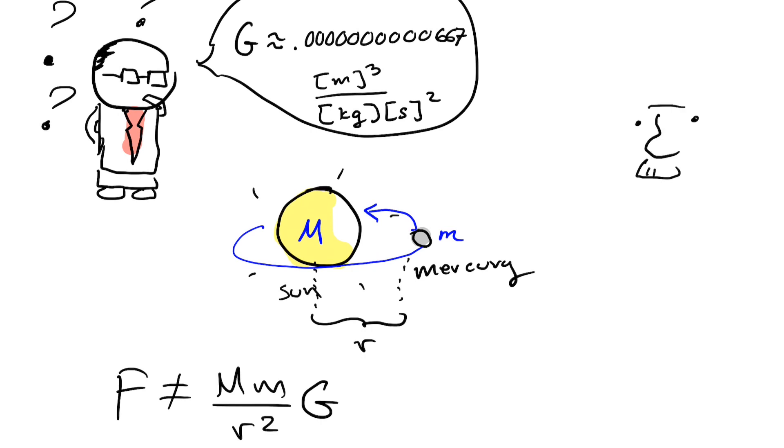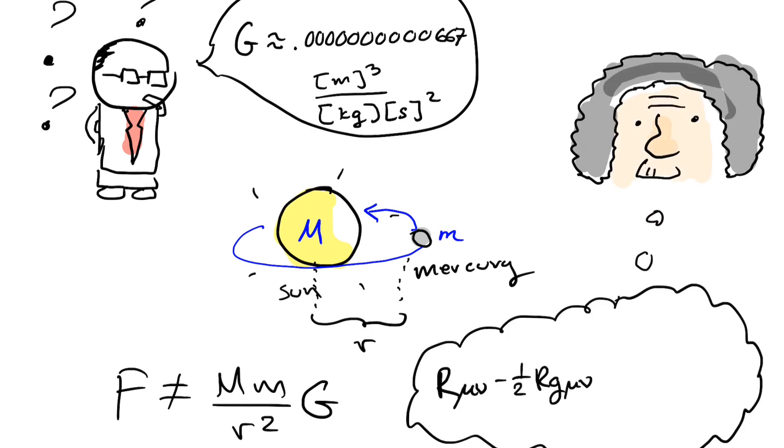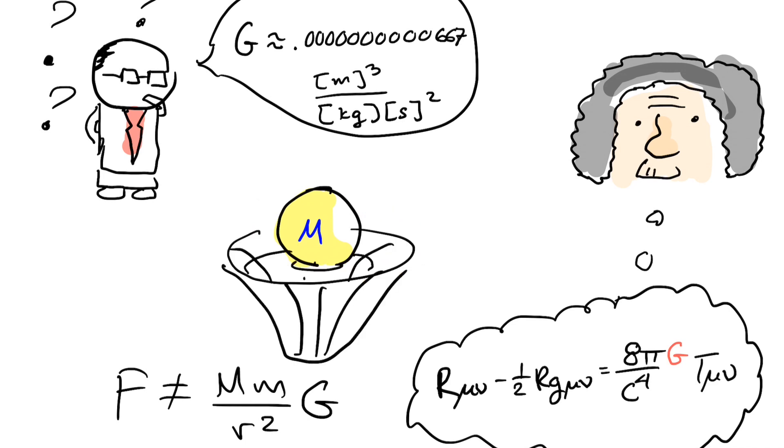It took a couple hundred years before a clever Jewish man reinvented the wheel and found a better description of the universe using an equation that also uses big G. Our upgraded equation may not be the full story either, and maybe someday another genius will come and reinvent our current understanding of the universe once again.